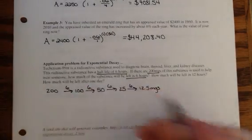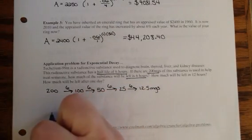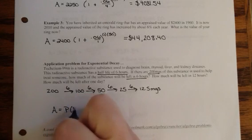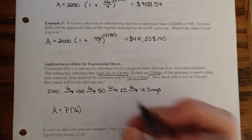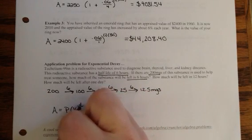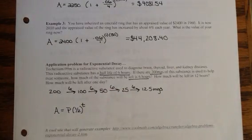Another way you can do these kind of problems for half-life is that your ending amount equals your principal. Your base here is going to be one-half, and then you're going to do T, which is going to be the number of half-lives that have gone by.